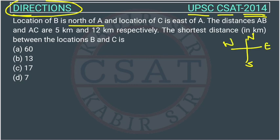Now, they have given that the location of B is north of A. Suppose A is here, then B is in the north of A, so B will be here. And the location of C is east — A is here, so C is in the east, so C will be here.